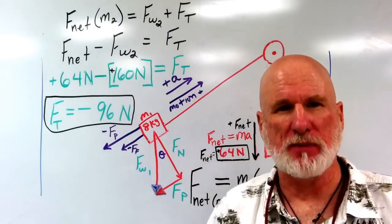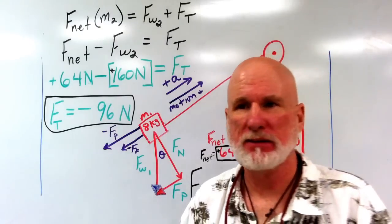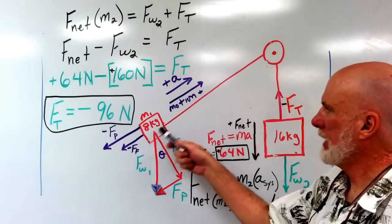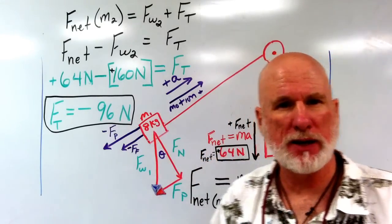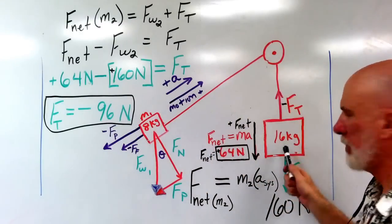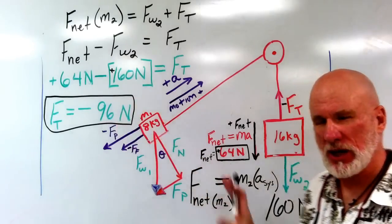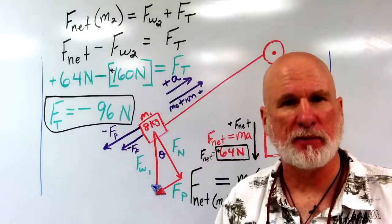I have everything done for you on the board, but let's see how you did if you tried it by yourself. So we had this 8 kilogram mass, M1, being pulled up a ramp by M2. There's a lot here, so let me pull this apart little by little.